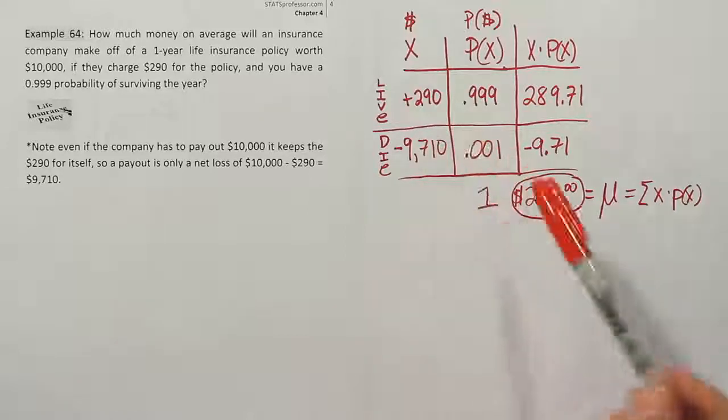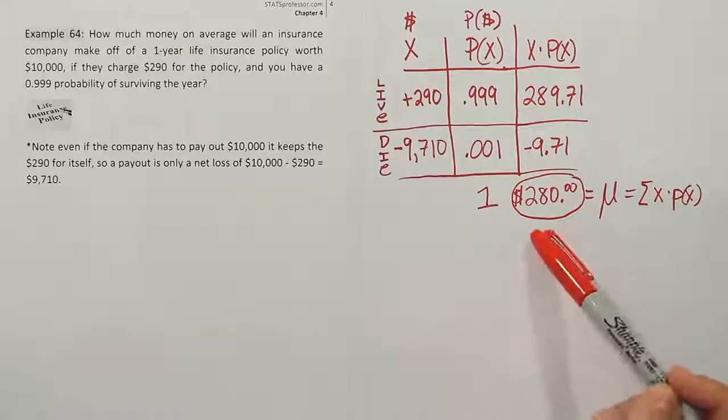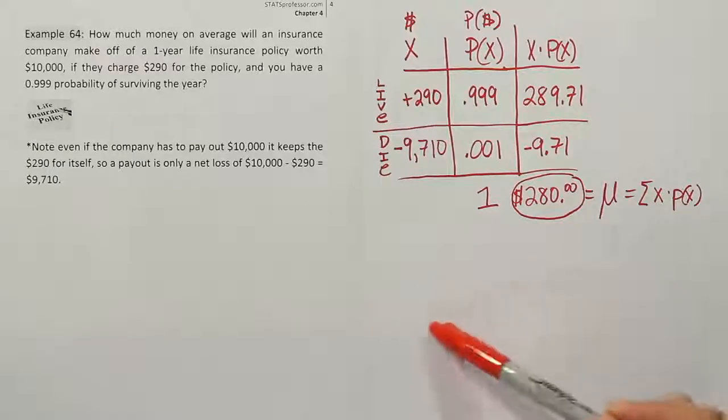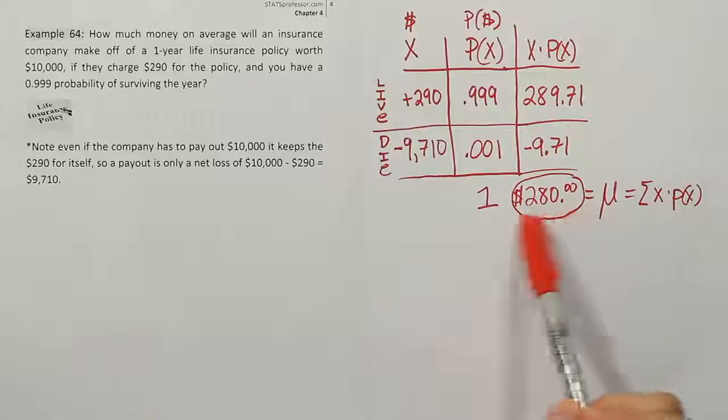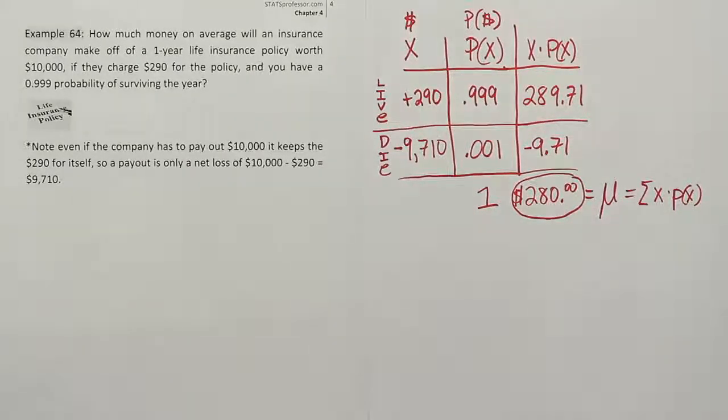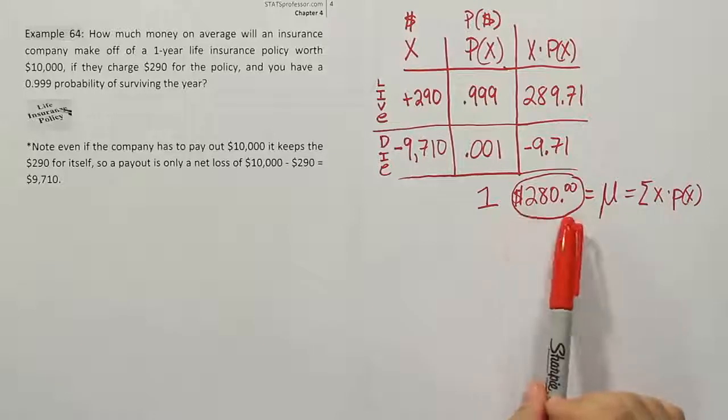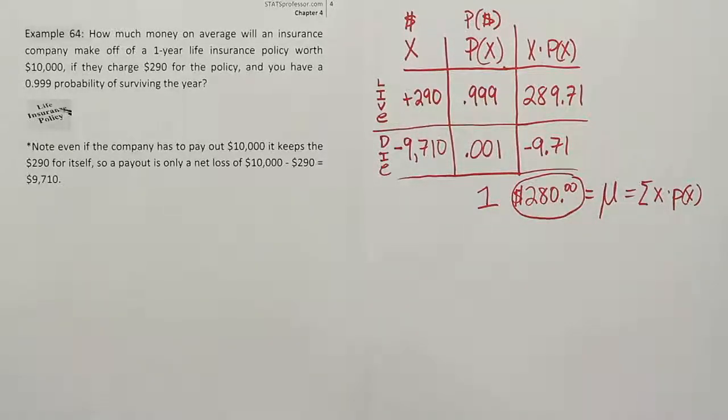When that happens, they'll have a total amount of money brought in and a total number of policies sold. What we're saying is if they divide the total amount of revenue they got from selling the policies by the total number of policies sold, it'll work out to be, if they have a large number of sales, about $280, because that would be the average amount they made. So it's actually quite a good business if you think about it. If you sold 1,000 policies, you'd make approximately $280,000 on average in a typical year.